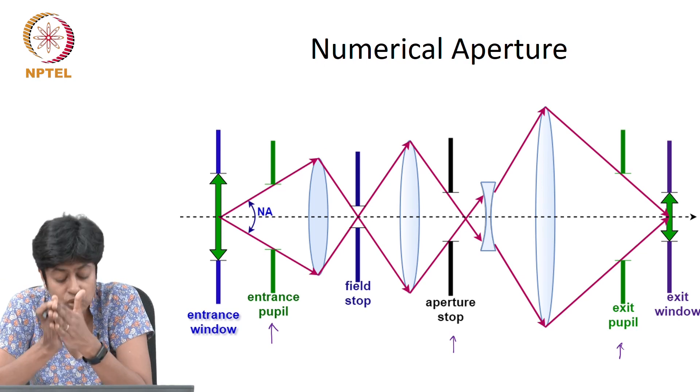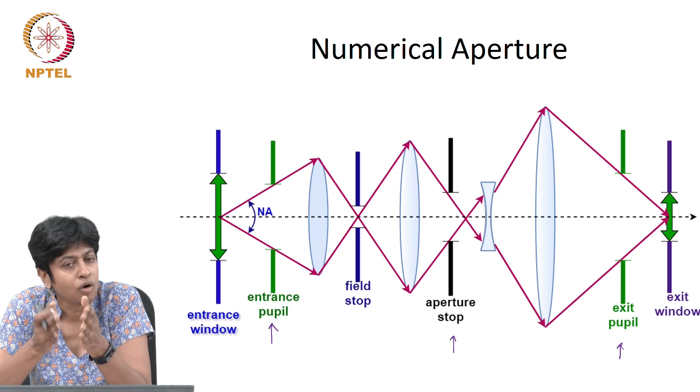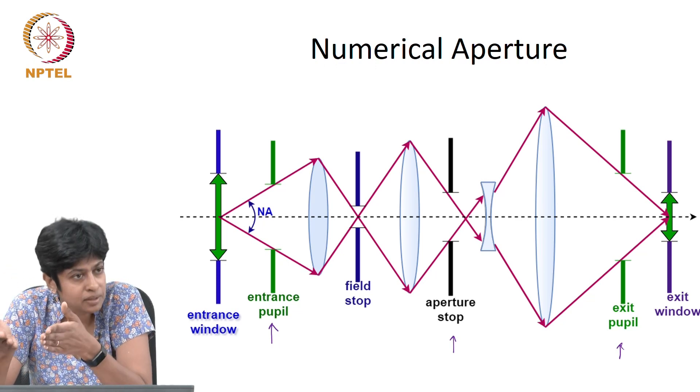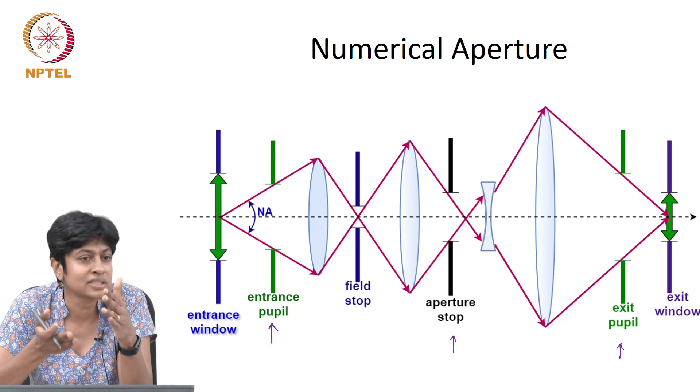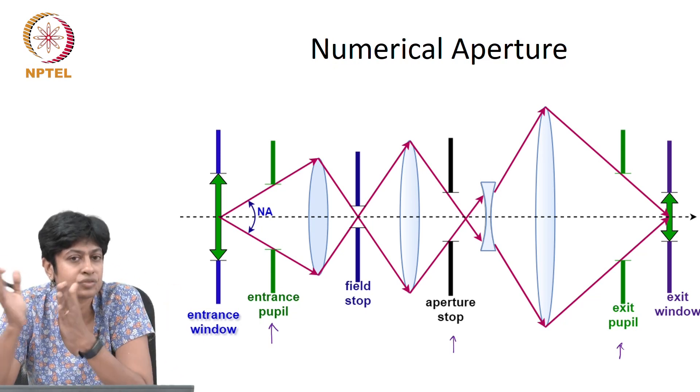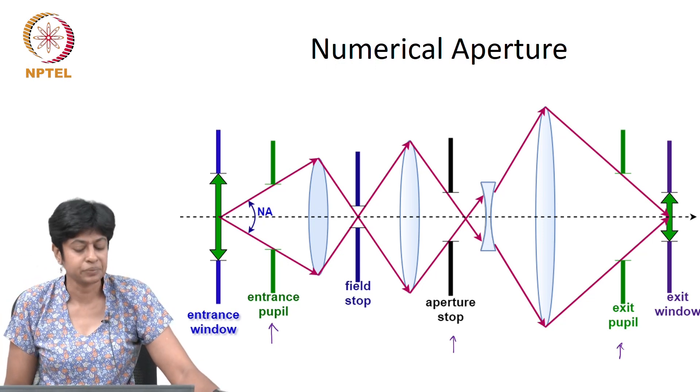So you can think of the aperture stop and the field stop as very similar. One set is for the field stop, one set is for the aperture stop. So you may see these terms, which is why I wanted you to be familiar with them.